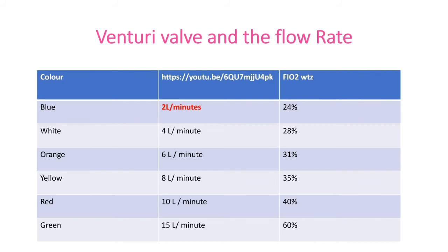Orange color provides 6 liters with 31% FiO2; yellow color provides 8 liters with 35% FiO2; red color provides 10 liters with 40% FiO2; and green color provides the maximum — 15 liters with 60% FiO2.